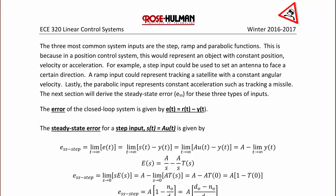For example, a step input could be used to set an antenna to face a certain direction. A ramp input could represent tracking a satellite with a constant angular velocity. Lastly, the parabolic input could represent constant acceleration such as tracking a missile. In the next section, we will derive the steady-state error for these three types of inputs.